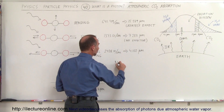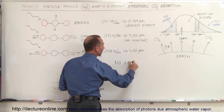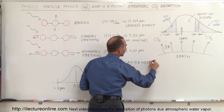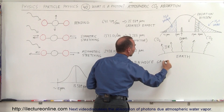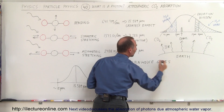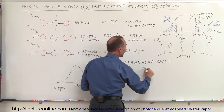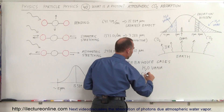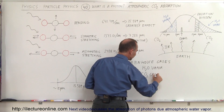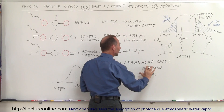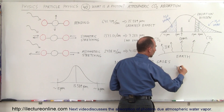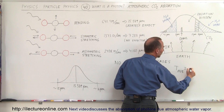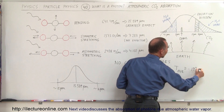So with no greenhouse gases in the atmosphere — the two primary greenhouse gases being water vapor (H2O vapor) and carbon dioxide (CO2 gas) — without those two greenhouse gases, the average temperature of the world would be about minus 19 degrees centigrade.